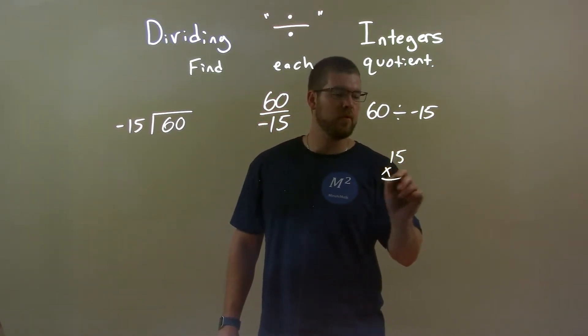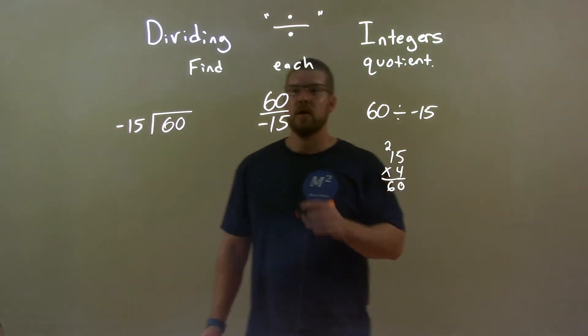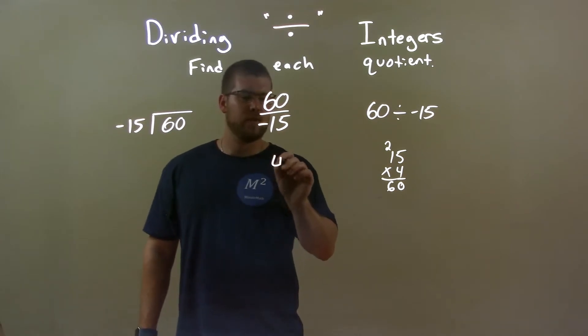15 times 4. 5 times 4 is 20, carry the 2. 4 times 1 is 4 plus 2 is 6. 60. So 60 divided by 15 is just a 4.